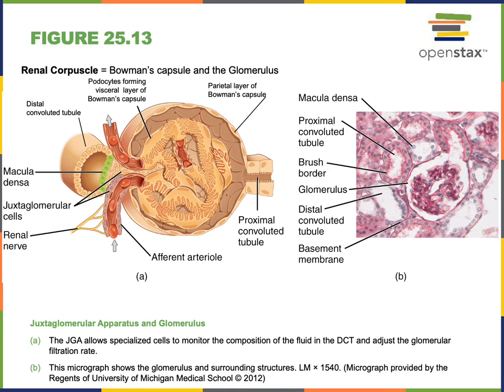The macula densa is a sensory region of the distal convoluted tubule that can detect the flow rate of liquid through the distal convoluted tubule and also monitor the sodium concentration of the liquid flowing through it. In response to a high flow rate, the macula densa will stimulate the afferent arteriole to contract in order to decrease the glomerular filtration rate as a tubuloglomerular feedback mechanism, helping to maintain a stable flow rate through the nephron.